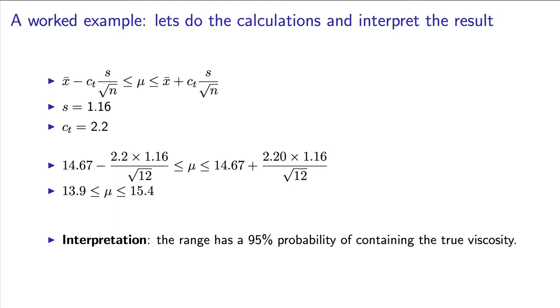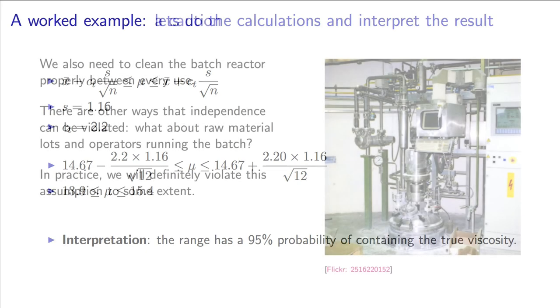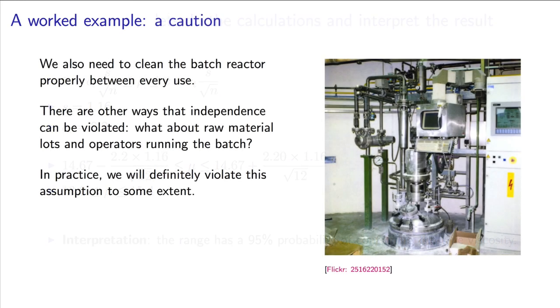There is one problematic feature though with this problem, of taking consecutive samples. In a batch process, unless we thoroughly clean out the batch between every run, we might have some carry over of material. This means that there could be a relationship between the samples. In practice, we would have to ensure that that is not the case.